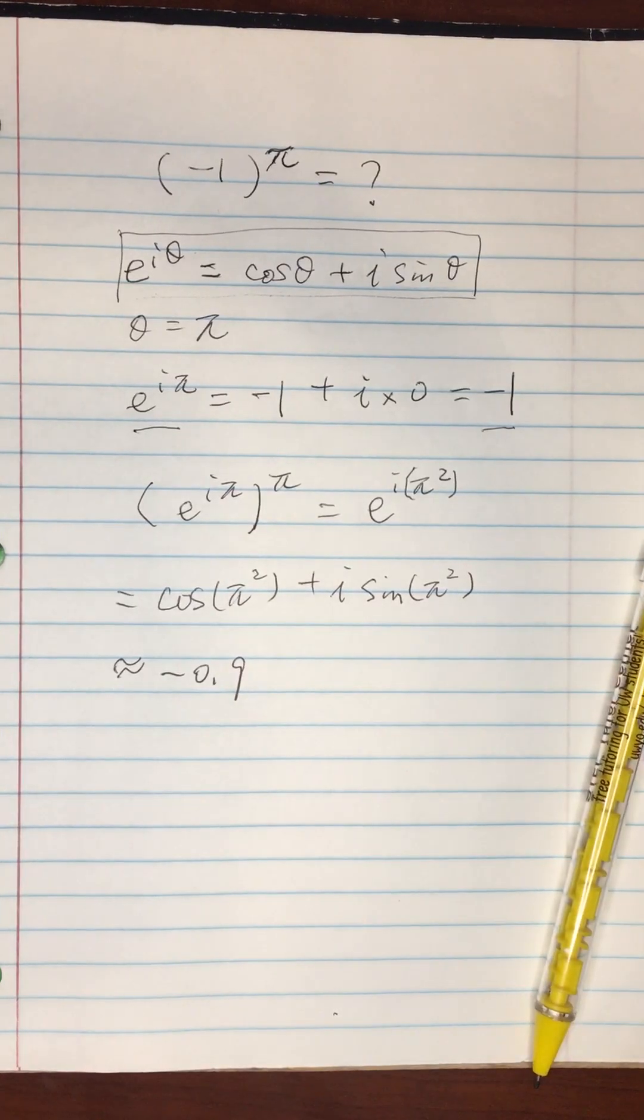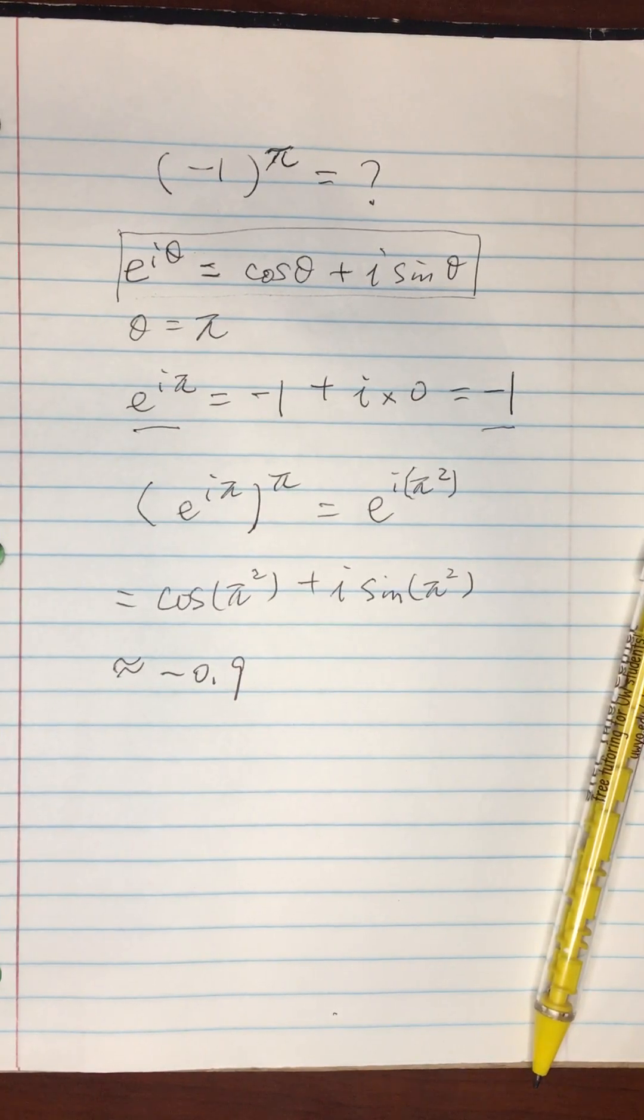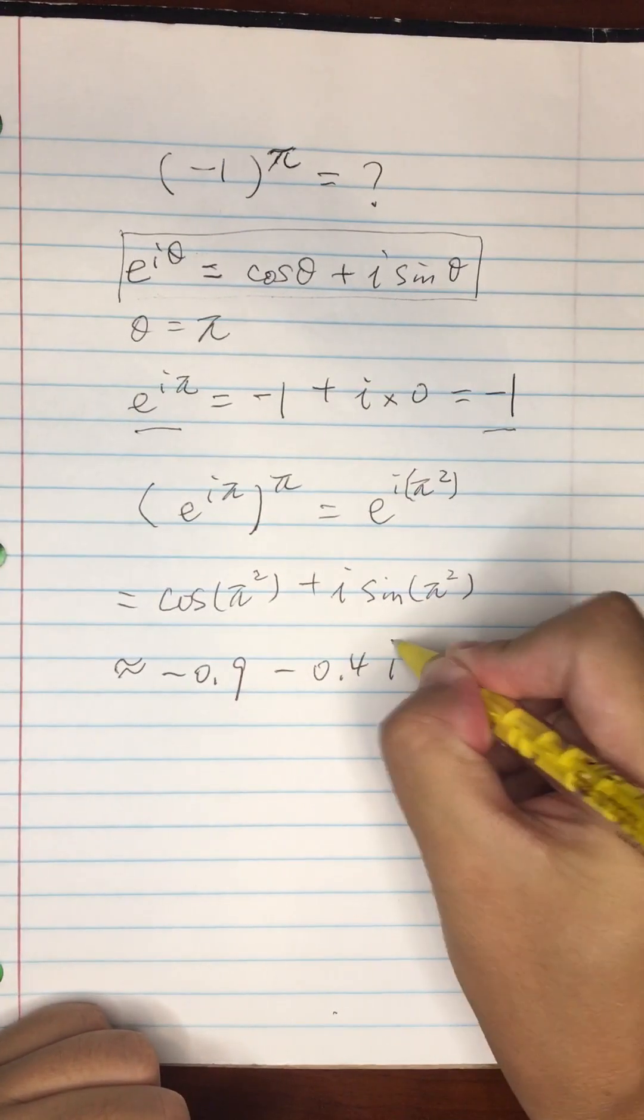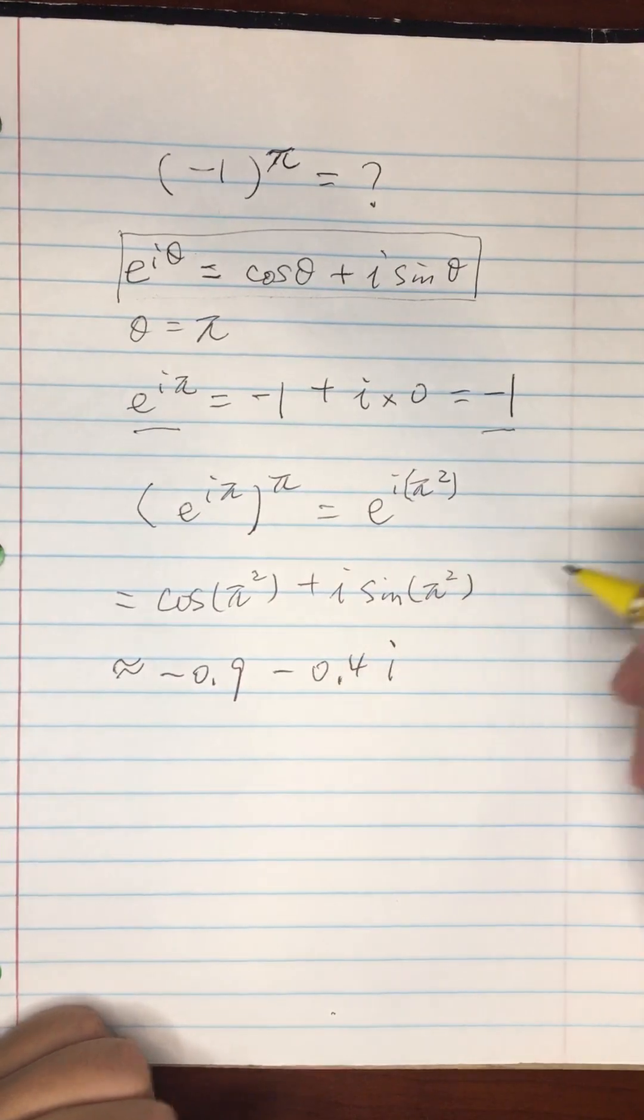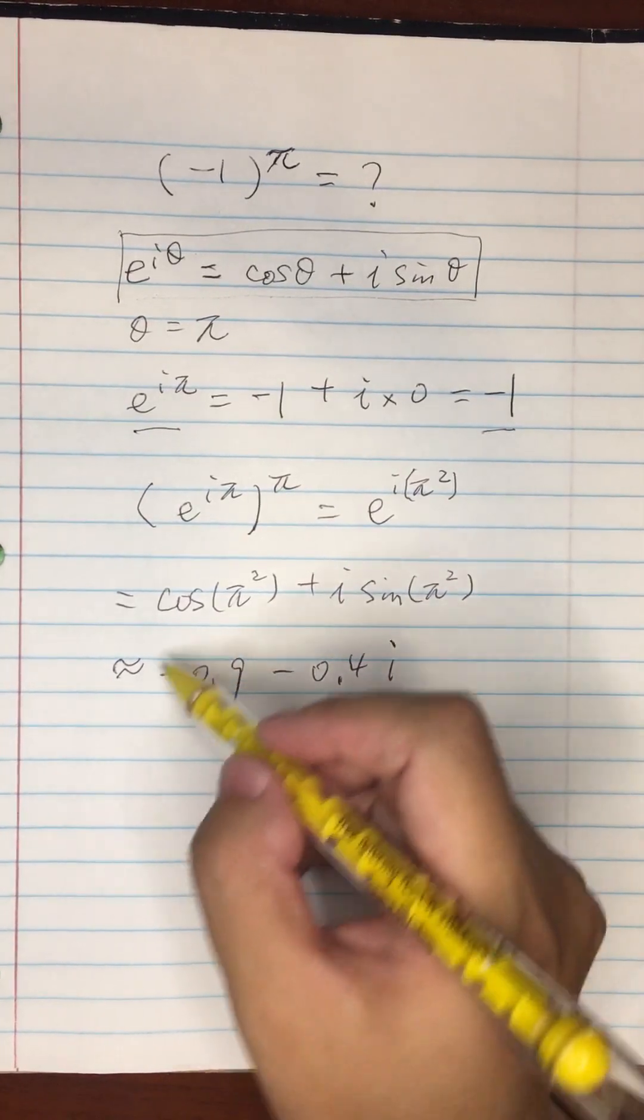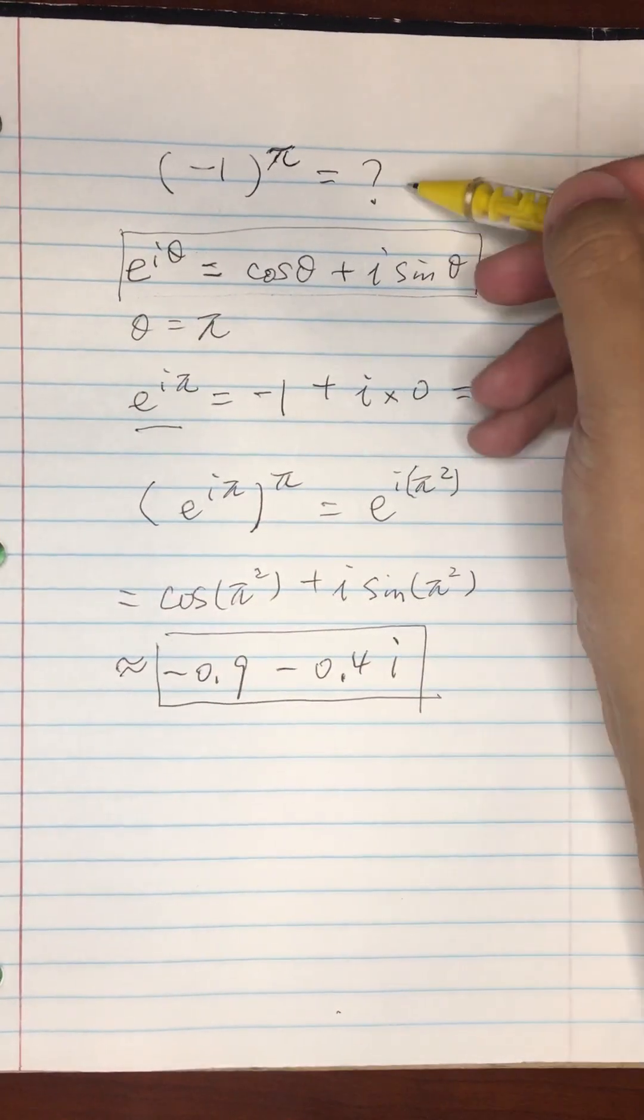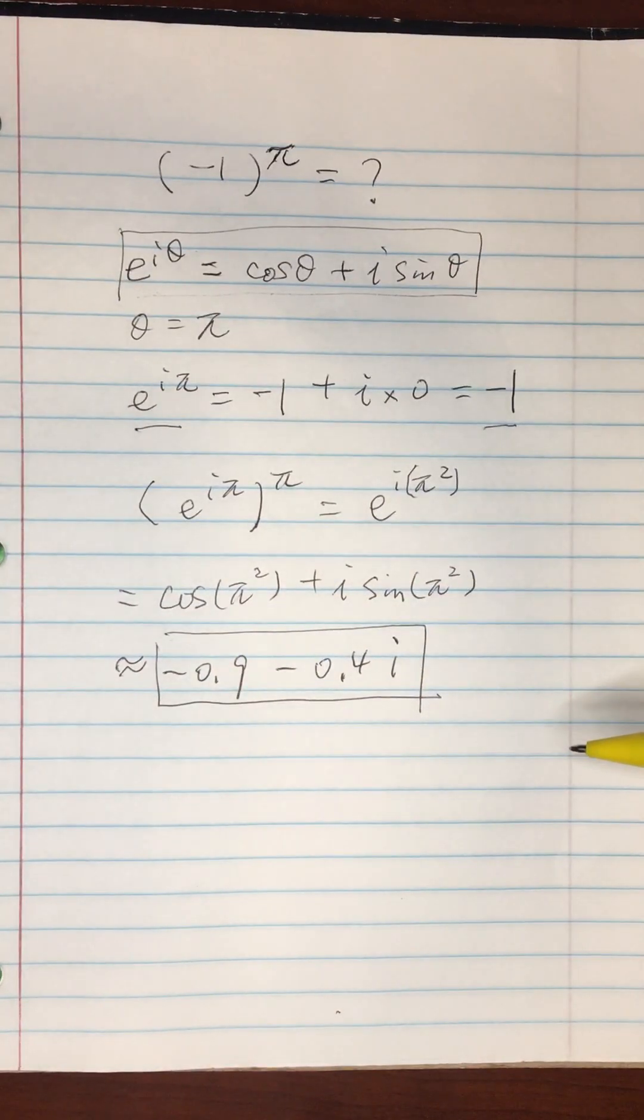And then sine pi squared is going to be minus point four i, about minus point four. So that's actually the approximate solution to this very nice problem.